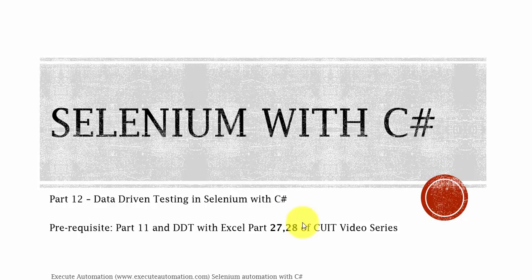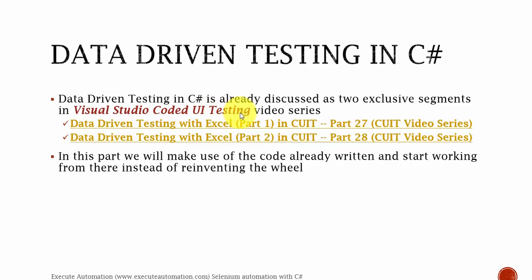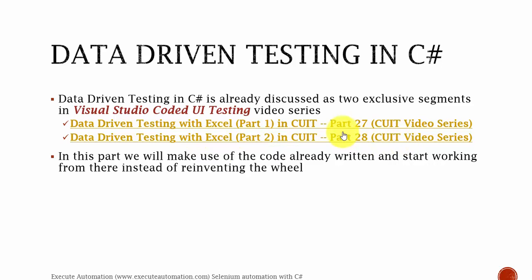Before watching this part, I would request you to watch part 11 of this series, and also part 27 and part 28 of the Visual Studio Coded UI Testing video series on this exeggutautomation channel, since this part is going to fully rely on those two parts. We have already discussed exclusively about reading data from an Excel sheet and populating that value into methods with a lot of detail in those two videos.